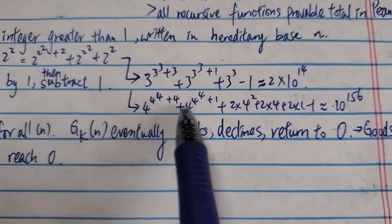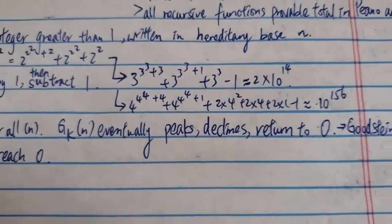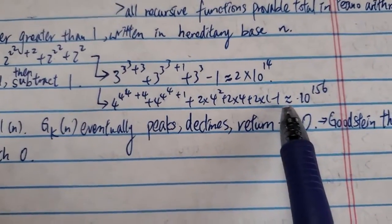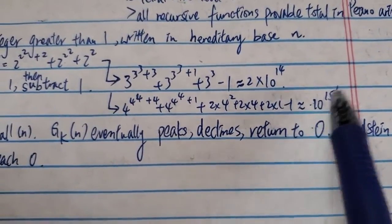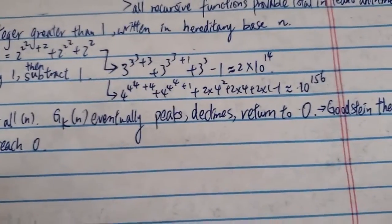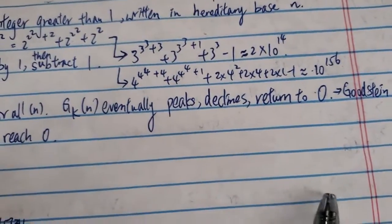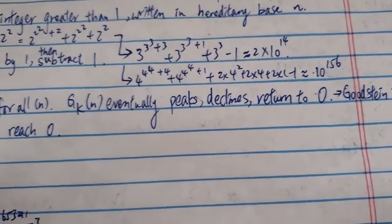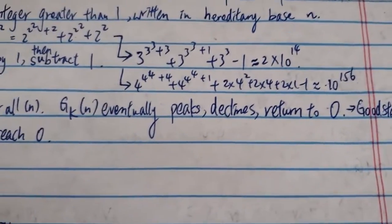And then the next step, you change all the threes to fours, something like that. This is from Googleology. And this number at the end is around 10 to the power of 156. And then the next step, you change all the fours to fives. And just try to imagine how big that number is at the end.